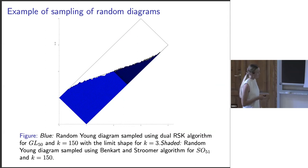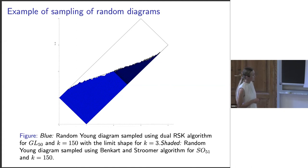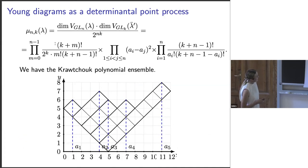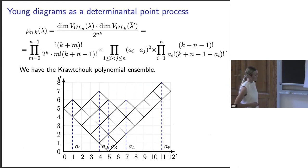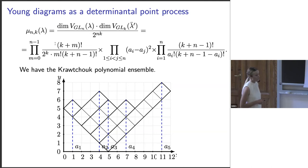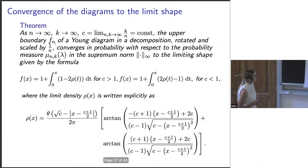Here is the limit shape obtained from sampling random diagrams. The small part corresponds to SO(51) and the big Young diagram corresponds to GL(50) — we can see that the small part fits inside the big part. This is also related to a determinantal point process: on a line we consider positions of points, and the weight is a binomial coefficient, giving the Krawtchouk polynomial ensemble.